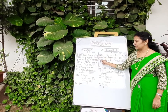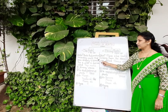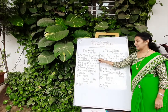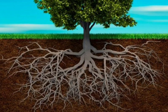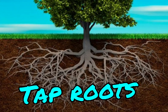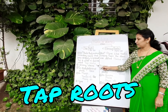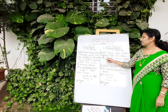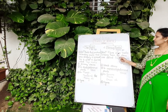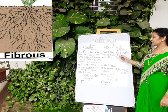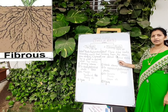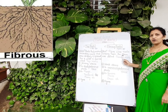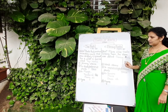Roots that produce secondary roots that grow obliquely and spread far and wide in soil are called tap roots. Whereas fiber-like roots arising from the stem are called fibrous roots.